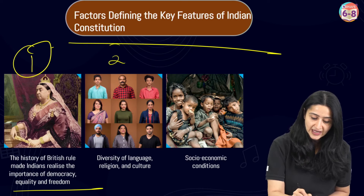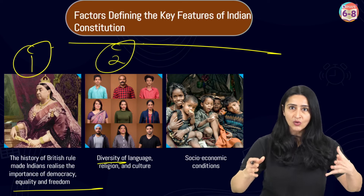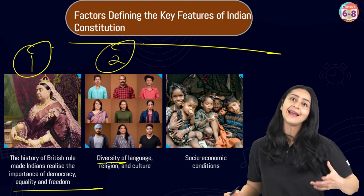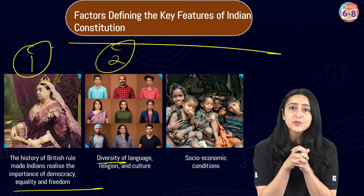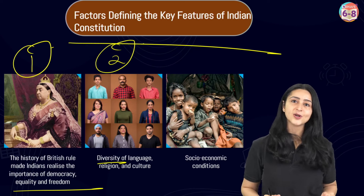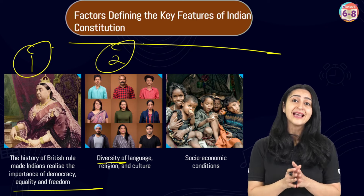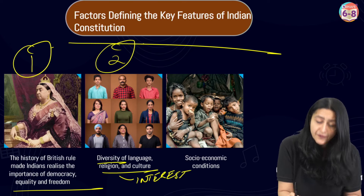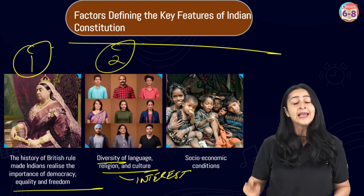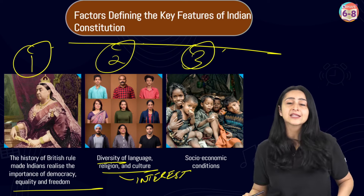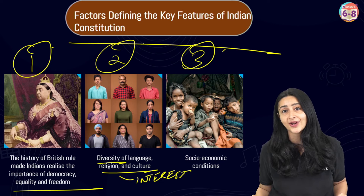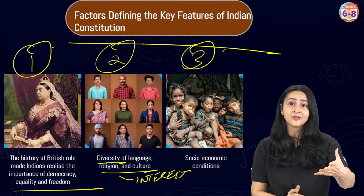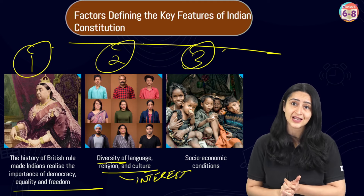The next factor was India's diversity. Our country was made up of several different communities who spoke different languages, belonged to different religions, and had their own distinct cultures. The Constituent Assembly — a body assembled for the purpose of drafting or revising a constitution — was very aware that the laws had to be made in such a way that they accommodated the interests of all these different groups of people.